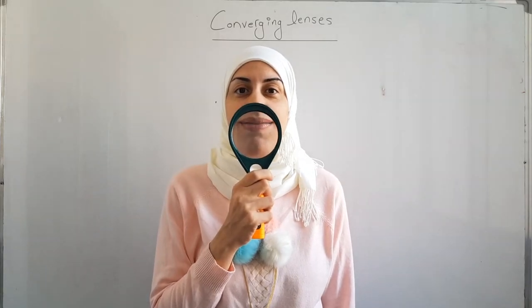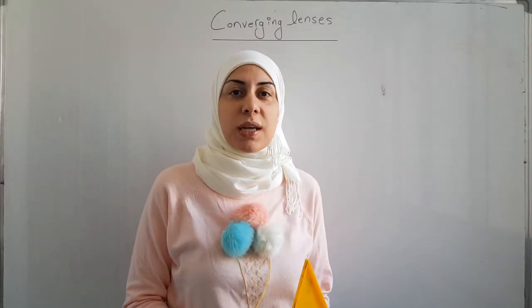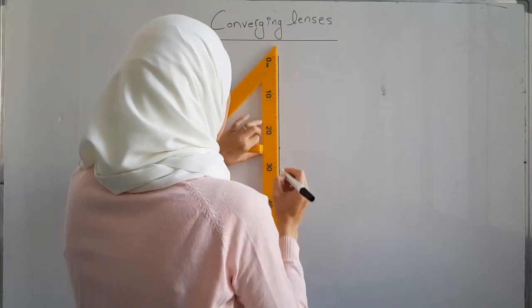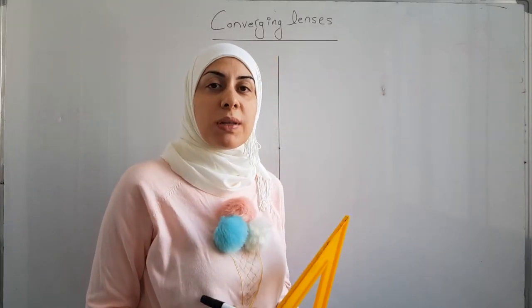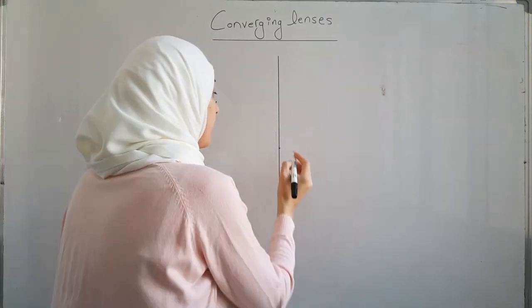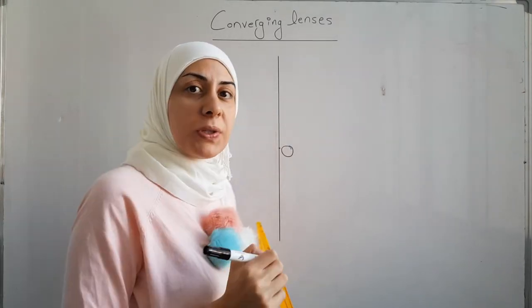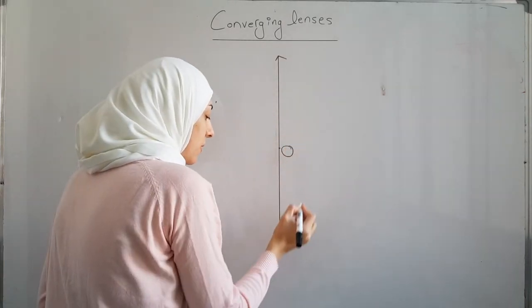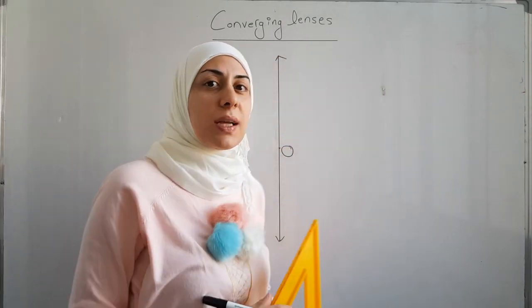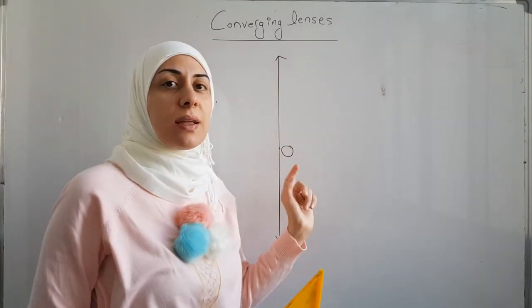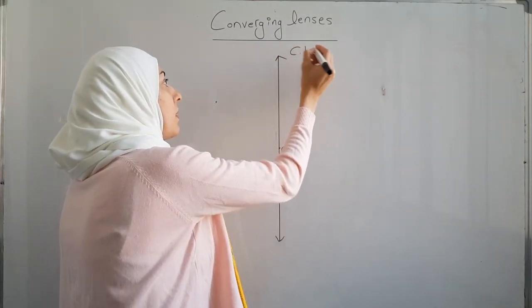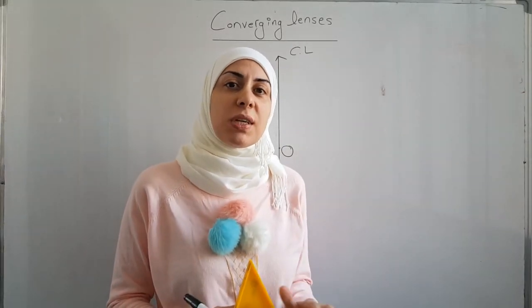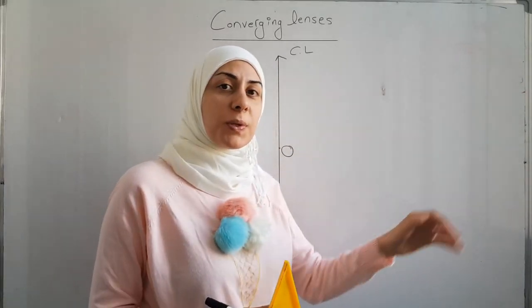We represent the converging lens by a segment. We call the midpoint the optical center O. We put arrows on both sides of the lens directed outwards, indicating that the converging lens has thinner edges than the center. Then we draw the optical axis, which is an imaginary line that passes through the optical center O.